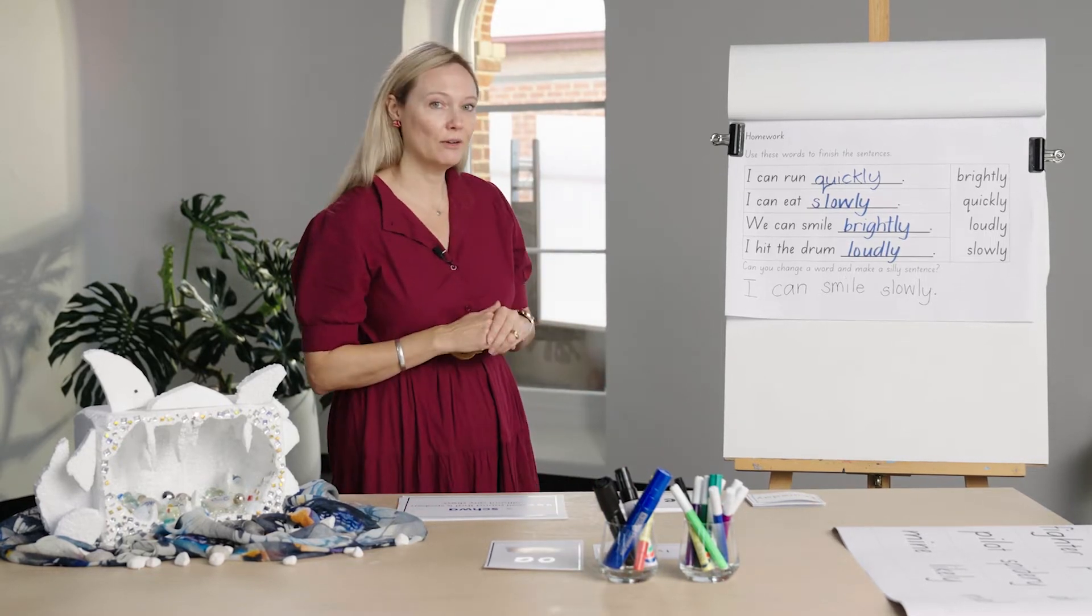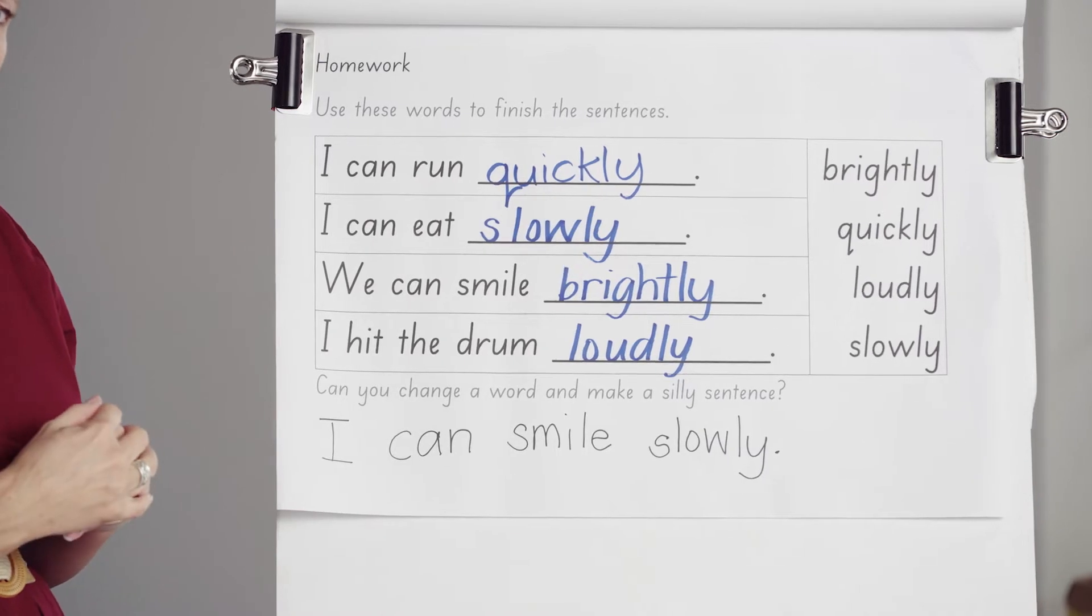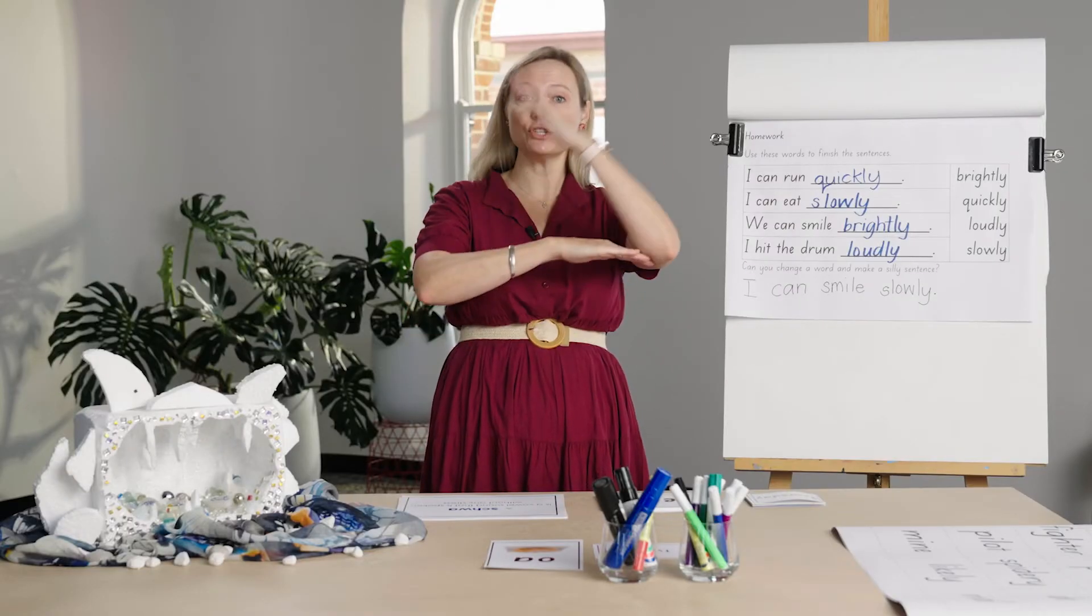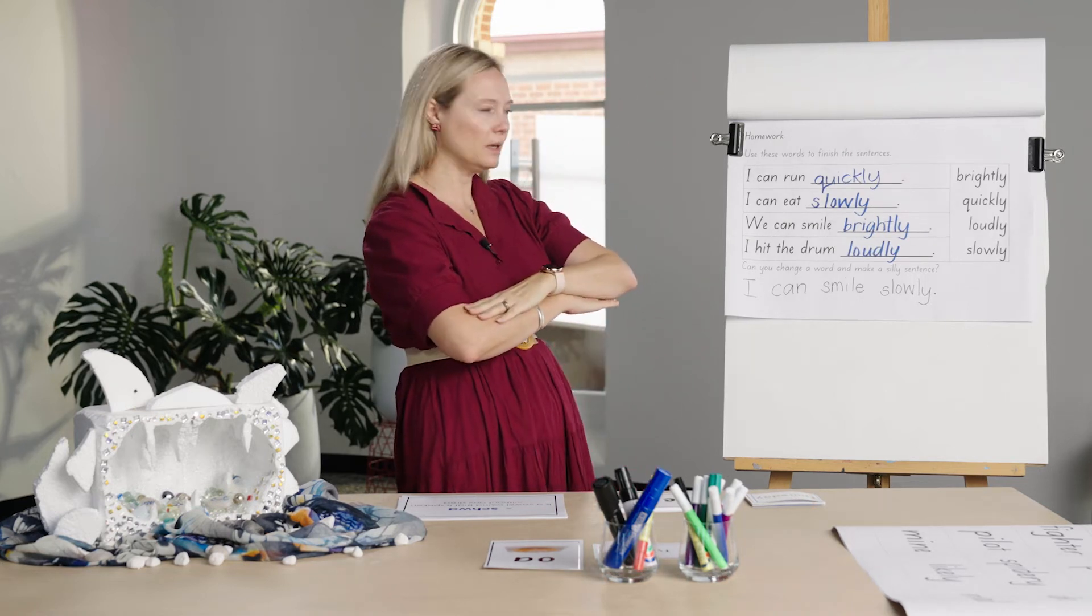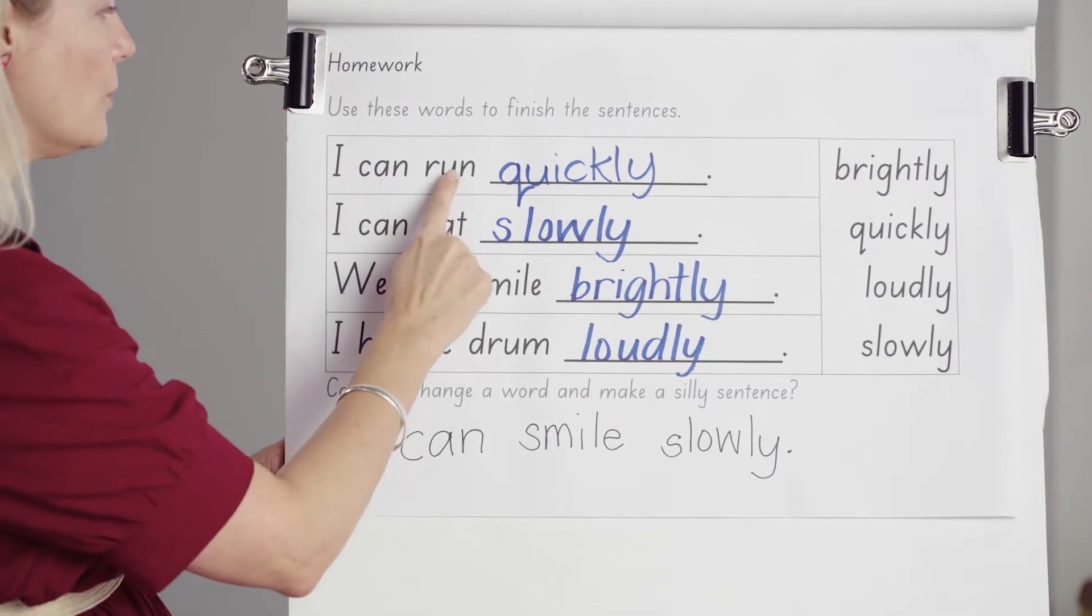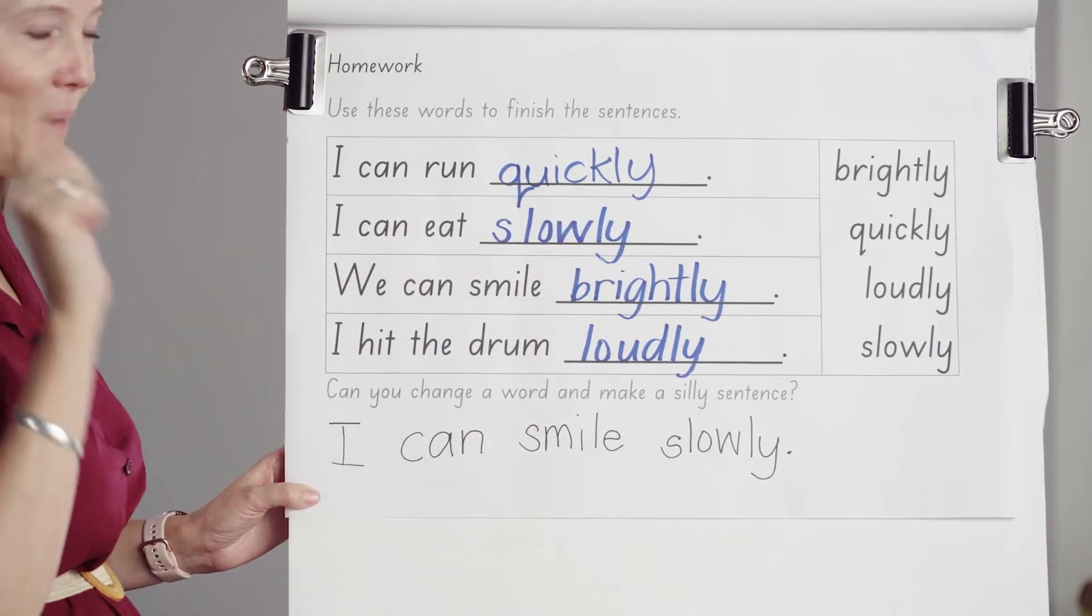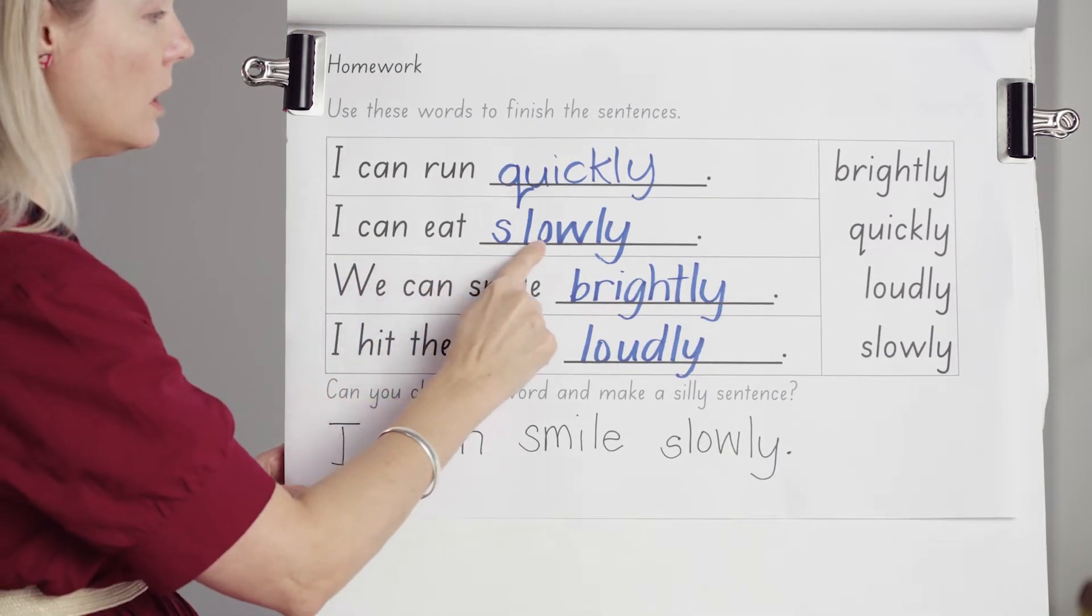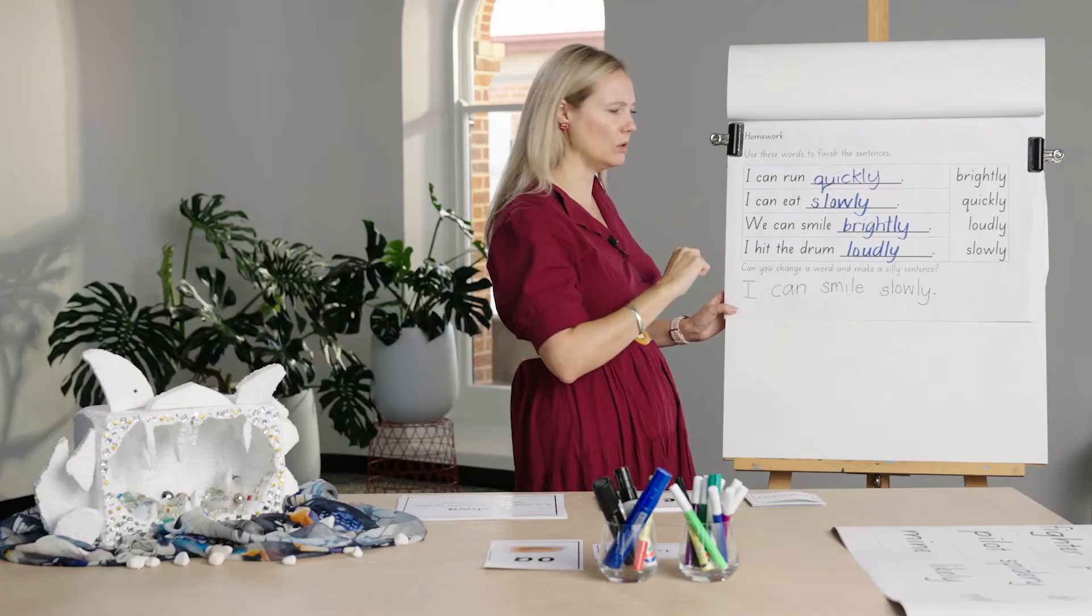Let's have a look at our homework from last lesson. Looks like you were learning about adverbs. Remember adverbs are when we add the suffix -ly to the end of a word. It changes it to an adverb. It describes the verb. Let's do some reading. I can run quickly. Did you get that one? Well done. I can eat slowly. It's good to eat slowly.